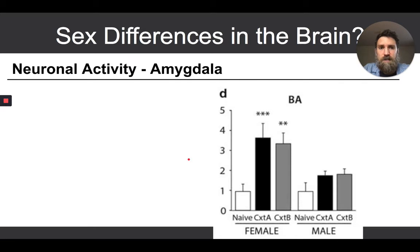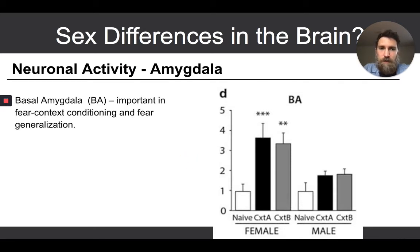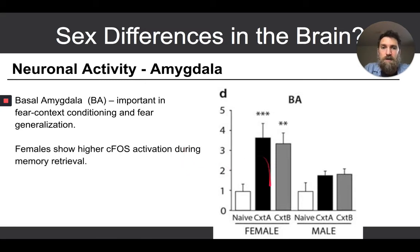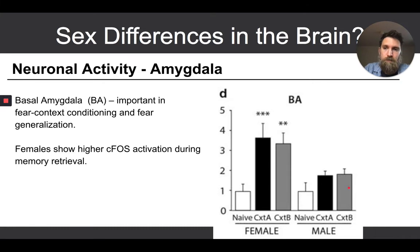They also looked at neural activity in the amygdala. The basal amygdala is important in fear context conditioning and fear generalization. If an individual shows a more extreme or generalized fear response, you'd expect their amygdala to be working overtime. Not surprisingly, females show higher CFOS activity in the amygdala during memory retrieval — when placed in the blue or purple box 24 hours later, their amygdala is working overtime relative to males. This aligns with the behavioral results showing a more extreme and generalized fear response in females.